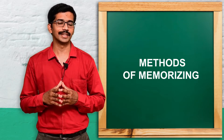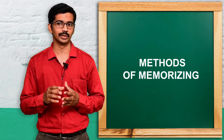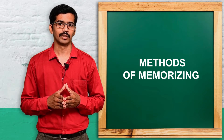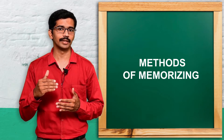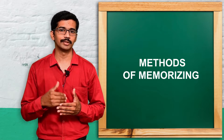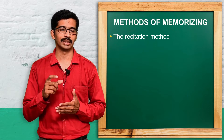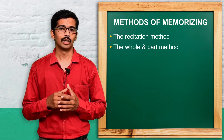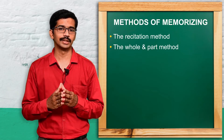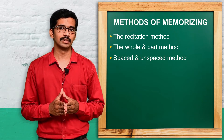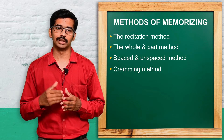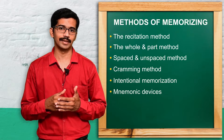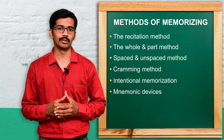So that is the methods of memorization or the techniques to improve memory. We'll see what are the various different types of techniques one by one. The first one is the recitation method, also called the repetition method. Next is the whole and part method, spaced and unspaced method, learning by doing, cramming method, intentional learning, and certain mnemonic devices or mnemonic techniques.